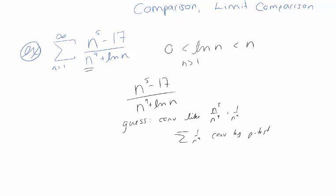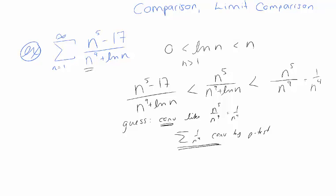But that's not really a proof. I claim I can be clever and do something with a direct comparison — and it's important that I've guessed convergence, so I know to look for a bigger series that also converges. A smaller series that converges isn't helpful. I can make the series bigger by removing the −17 from the numerator. Then, to handle the log n, I make a smaller denominator by replacing log n with zero, which gives a bigger series. This simplifies to 1/n^4, which converges by the p-test.